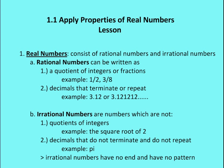What's a rational number? Well, a rational number can be written as a quotient of integers or a fraction. So an example would be 1/2, 3/4, 3/8, 7/8, etc. A rational number can also be a decimal that terminates or repeats. For example, 3.12 or the repetitive decimal 3.121212, etc.